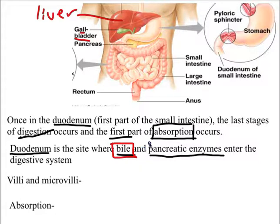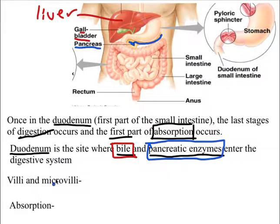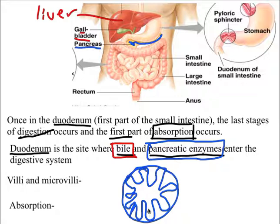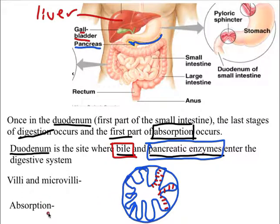Pancreatic enzymes are made in the pancreas, located just behind the stomach. These enzymes help break things down in the duodenum. There are also villi and microvilli on the inside of the small intestine — finger-like projections whose job is to absorb things. Each finger-like structure is a villus, and each villus has even smaller finger-like microvilli sticking off it for even more absorption.